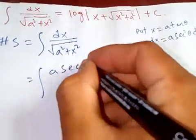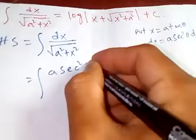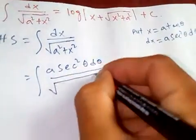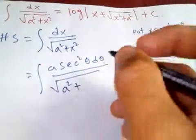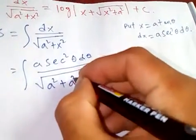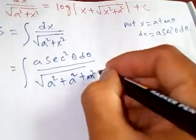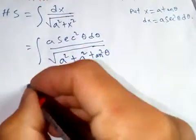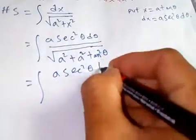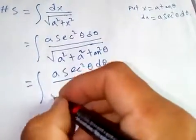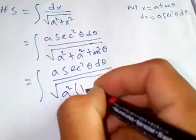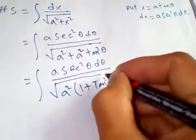Now substitute into the integral: we have a·sec²θ dθ in the numerator, and in the denominator we have square root of a squared plus x squared. Since x = a·tan θ, x squared = a²·tan²θ. So we get a·sec²θ dθ over square root of a² plus a²·tan²θ. Factoring out a², we get square root of a squared times one plus tan squared theta.